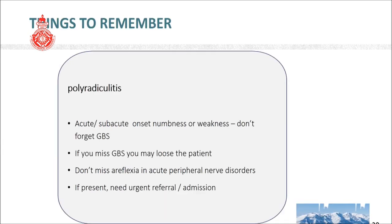Do not forget possible Guillain-Barré syndrome when you see a patient with acute or subacute onset numbness and weakness — if you miss GBS, you may lose that patient. Do not miss areflexia in acute peripheral nerve disorders. If you identify or suspect it, the patient needs urgent referral and admission, because you cannot miss acute polyradiculitis.